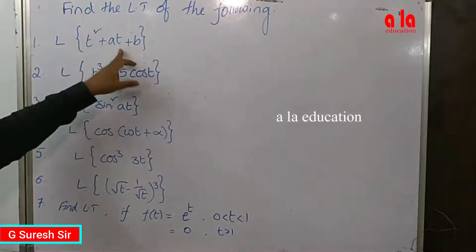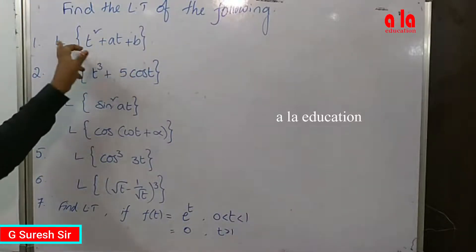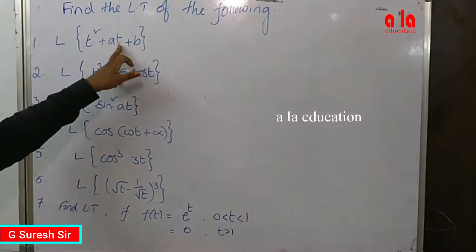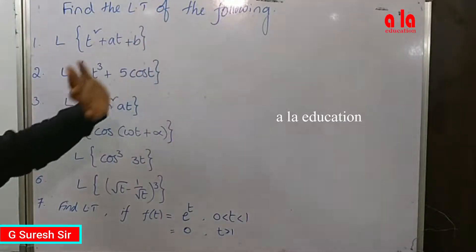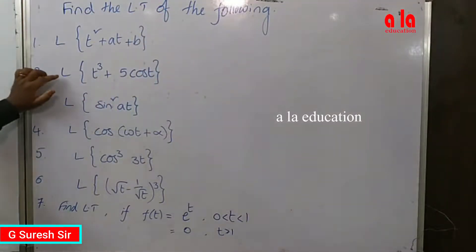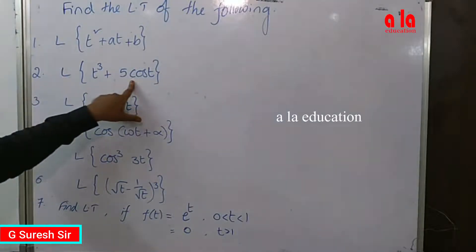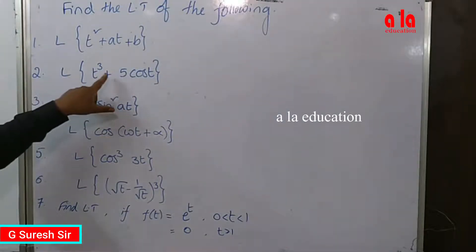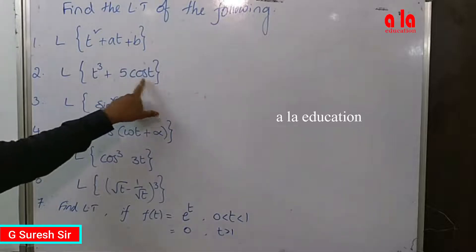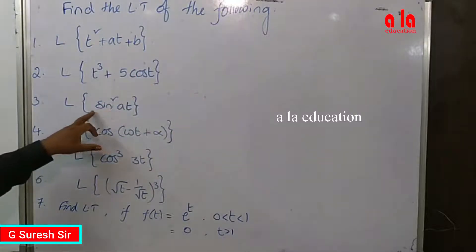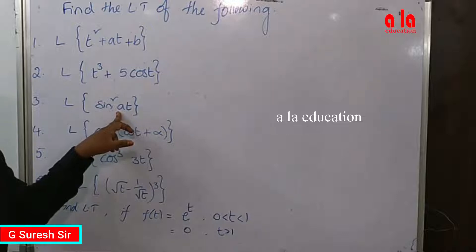For the first one, you can separate using linearity: Laplace transform of u plus v plus w form. So Laplace transform of t squared plus a into Laplace transform of t plus b into Laplace transform of 1. The second one also uses the u plus v form: Laplace transform of cosine cubed plus 5 into Laplace transform of cosine t.